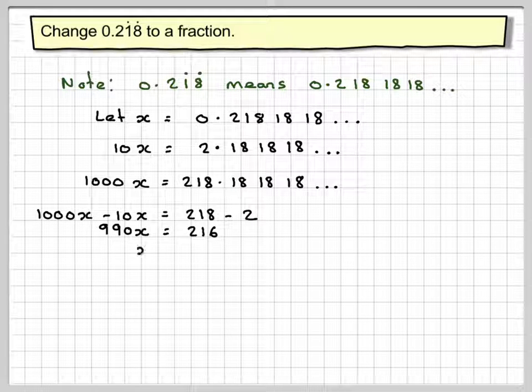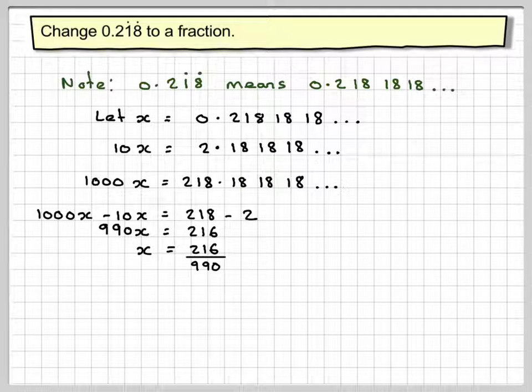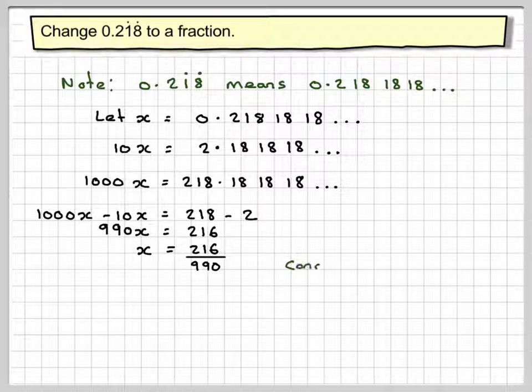You now divide by 990, so you get 216 divided by 990. I think 18 goes into both those numbers; if not, you just cancel down.